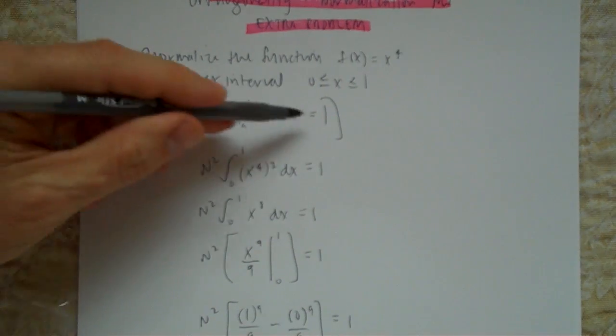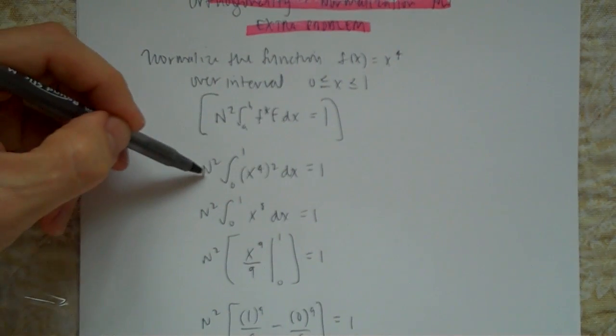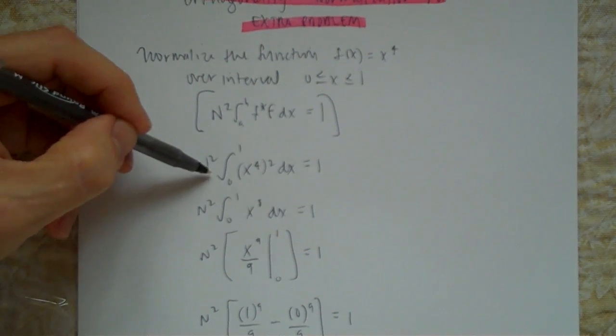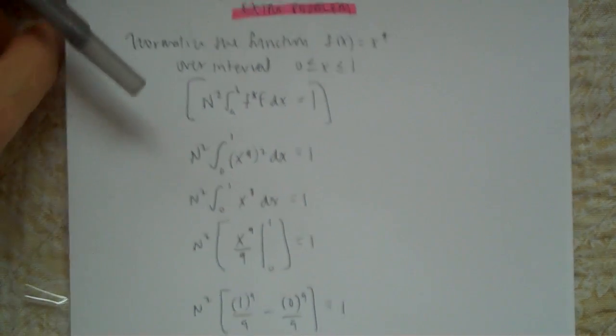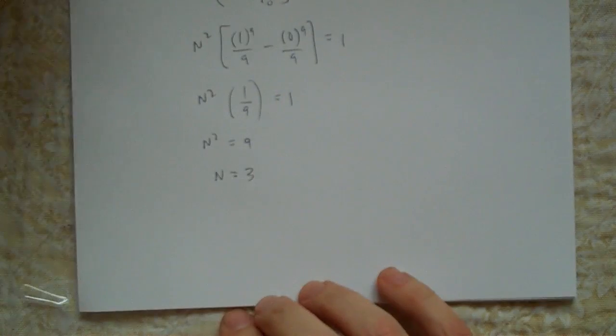So if you put 3 here, that'll make all of that true. If you put a 3 right there, 3 squared, it's going to make this integral equal to 1, the area under that curve equal to 1. That's amazing, isn't it? So that's the normalization factor.